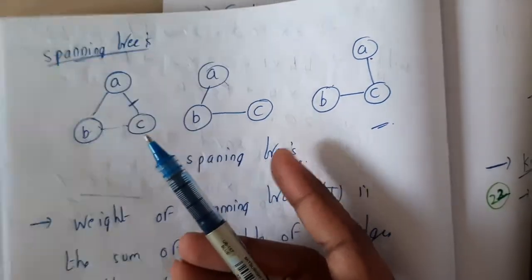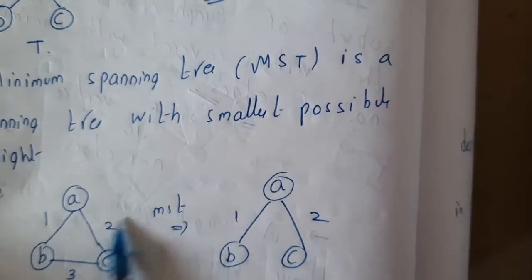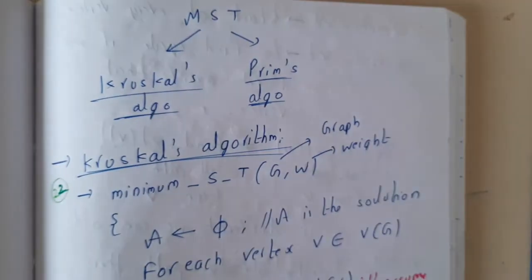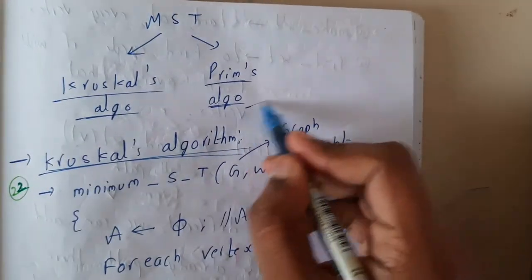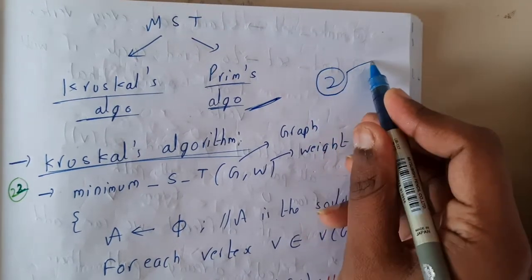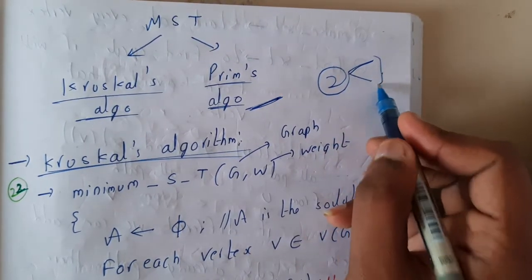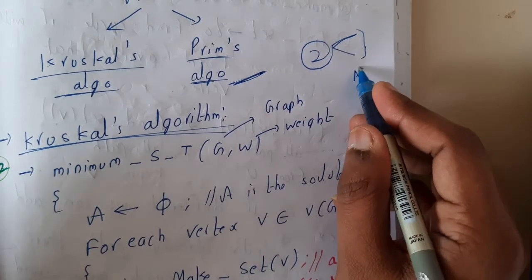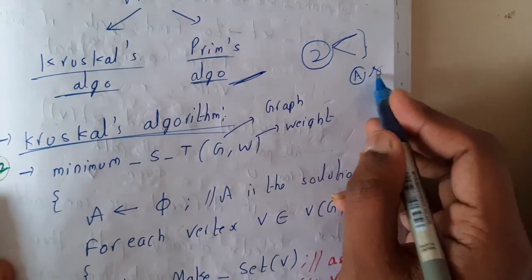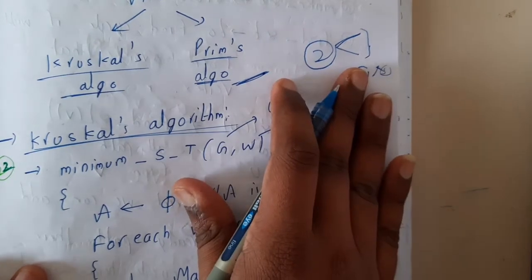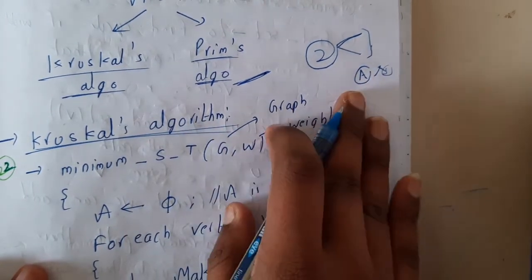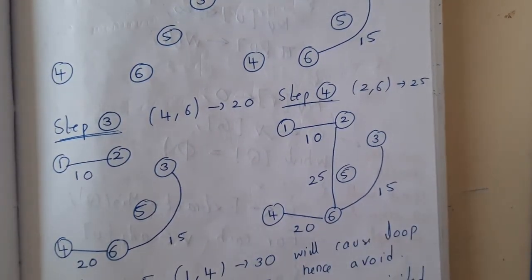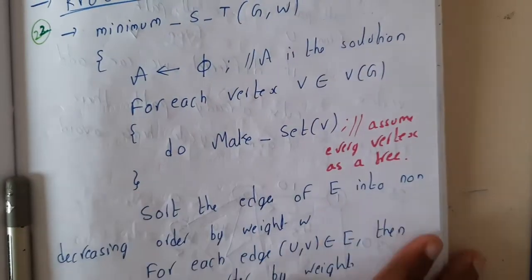To construct minimum cost spanning trees we have two algorithms: Kruskal's and Prim's. Both algorithms are easy to apply when solving problems, though understanding the algorithm itself can be a bit difficult. You can solve problems even without fully understanding the algorithm. In the next lecture I'll be introducing Kruskal's algorithm and we'll be solving a problem on that. Thank you for watching.